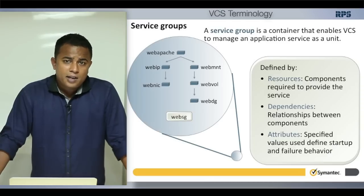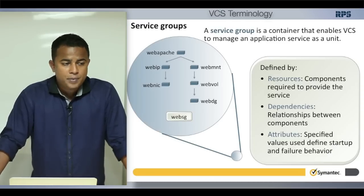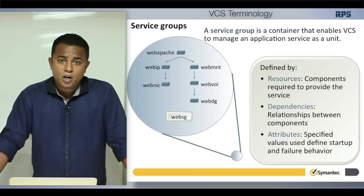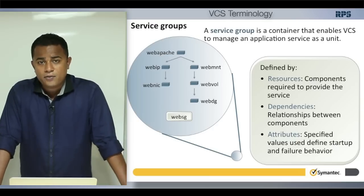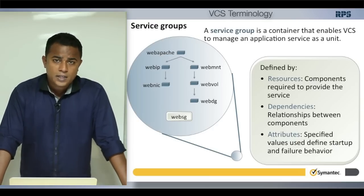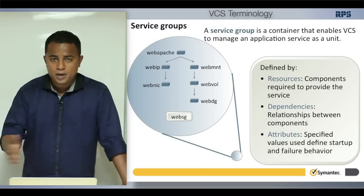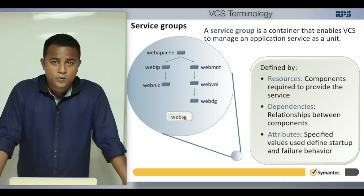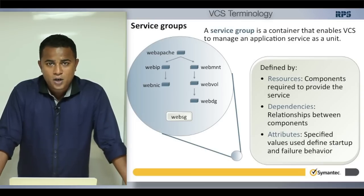The reason we use a service group is to move resources as a container from one machine to another. If a service fails — say your storage is disconnected — just moving the storage resource alone won't make sense. All services must move together: the IP, the data, and the application itself must all move over to the other machine.